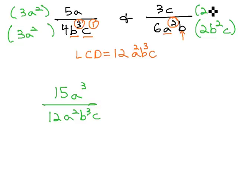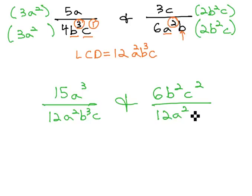So we're multiplying numerator and denominator by 2b squared c. Multiplying the numerator gives us 6b squared c squared over the denominator we want of 12a squared b cubed c.